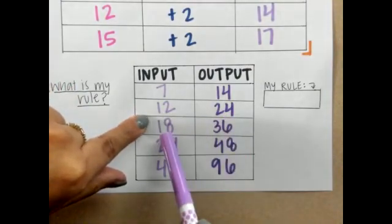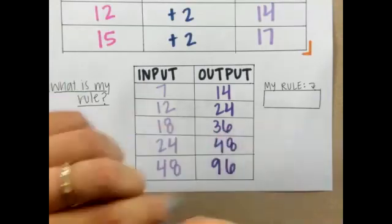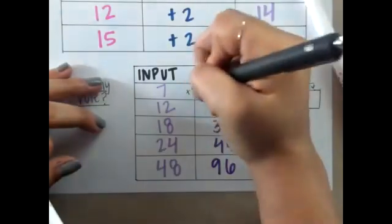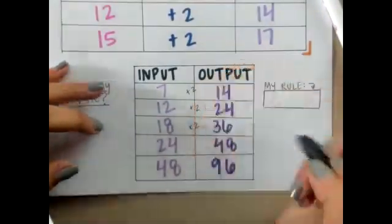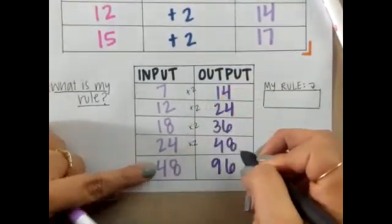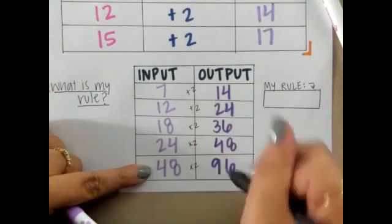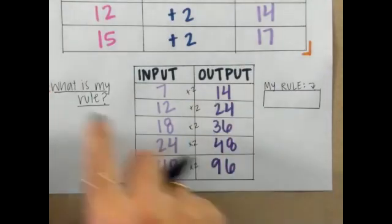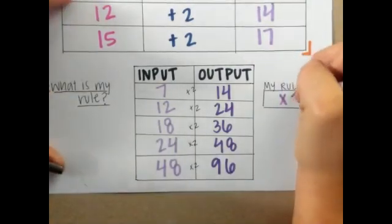18 times 2 is 36. It looks like my rule of times 2 is working. 24 times 2, that does give me 48. And 48 times 2, that does give me 96. So what is my rule? My rule is times 2.